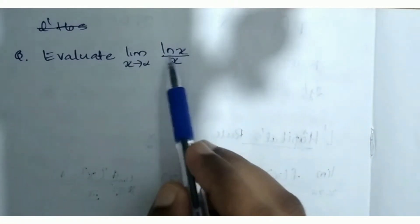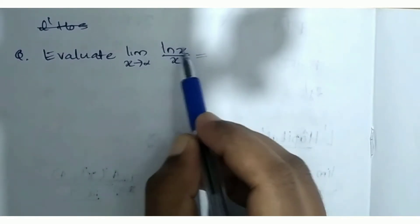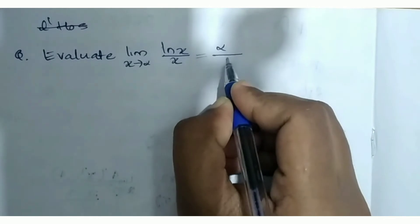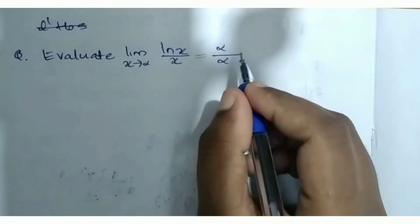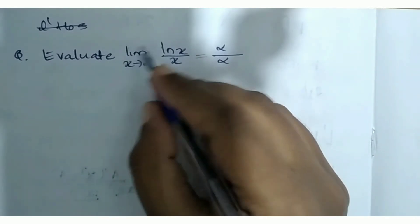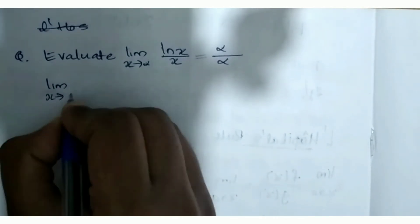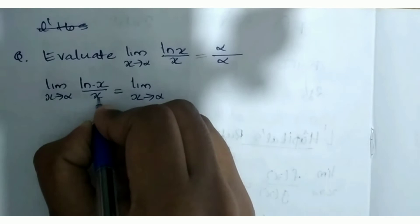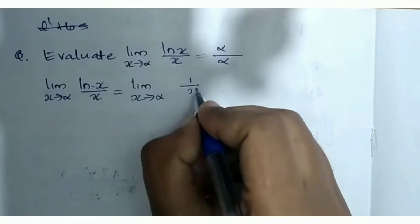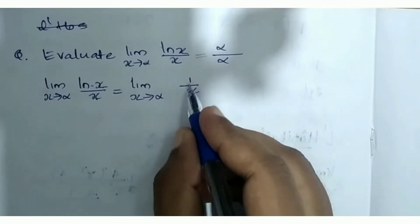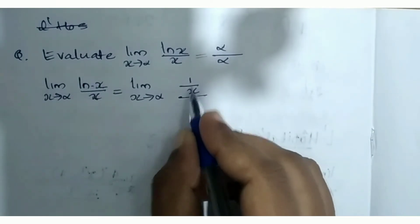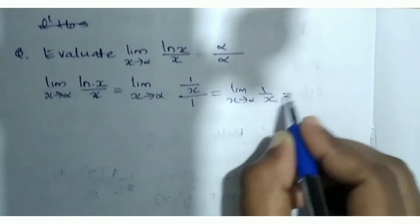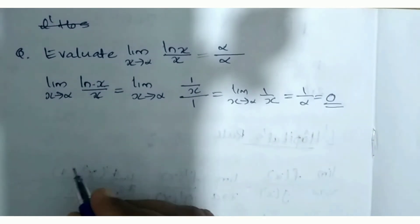Next question: evaluate limit x tends to infinity of ln(x) by x. Substituting x = ∞: ln(∞) is infinity, and x is infinity, so we have the indeterminate form infinity by infinity. We apply the L'Hôpital's rule: limit x tends to infinity of ln(x) divided by x equals limit x tends to infinity of the differential of ln(x), which is 1/x, divided by the differential of x, which is 1. So we get 1/x divided by 1.